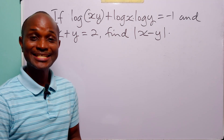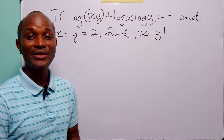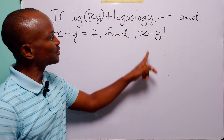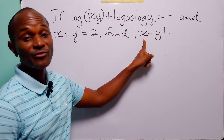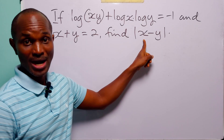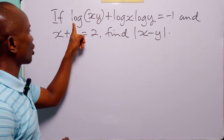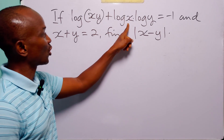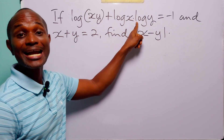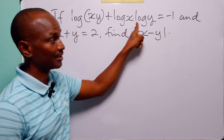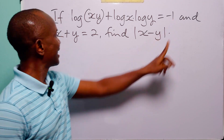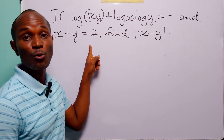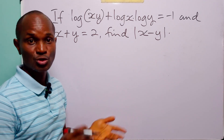Hello and welcome. In this tutorial, our task is to find the absolute value of x minus y, given that log(xy) plus log(x) times log(y) is equal to minus 1, and x plus y is equal to 2.